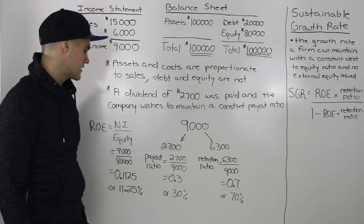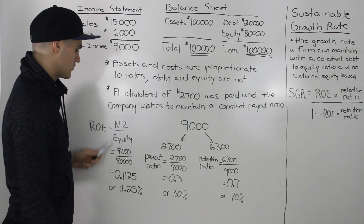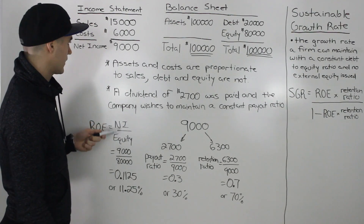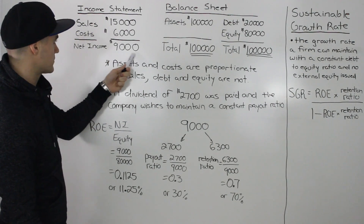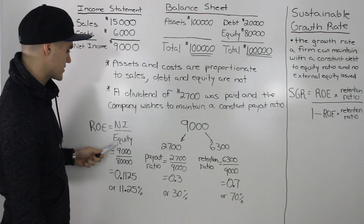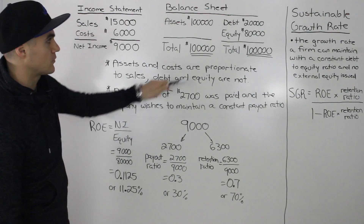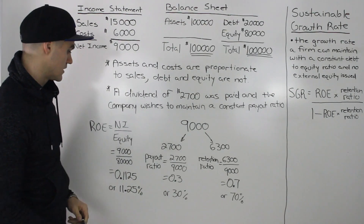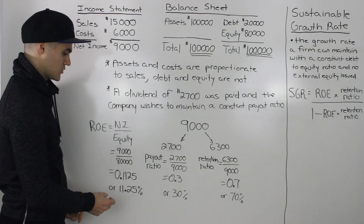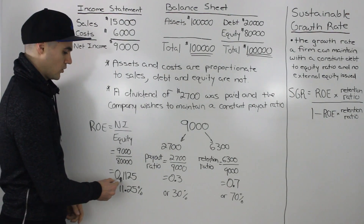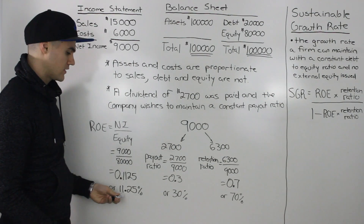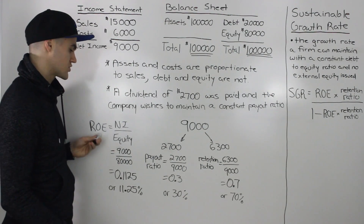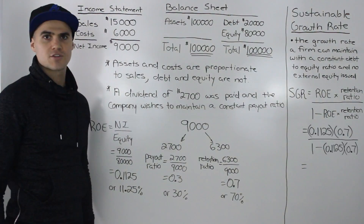The return on equity we can easily calculate with the formula: net income over equity. So the net income we get from the income statement is $9,000, and the equity from the balance sheet is $80,000. Dividing those two numbers, we would get 0.1125, or 11.25% for the return on equity ratio.